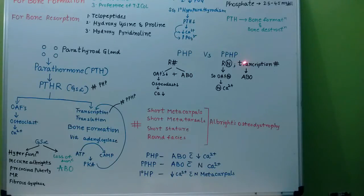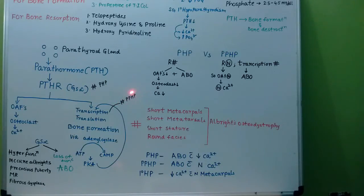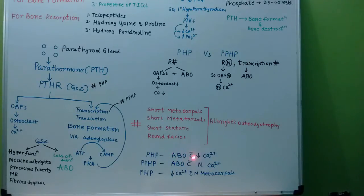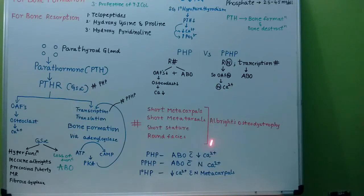In pseudo-pseudo-hypoparathyroidism, the receptor is normal, but the defect lies in transcription. Because the receptor is normal, the osteoclast activating factors are normal, and so calcium levels will be normal. However, as transcription is defective, there will be Albright's osteodystrophy in pseudo-pseudo-hypoparathyroidism.